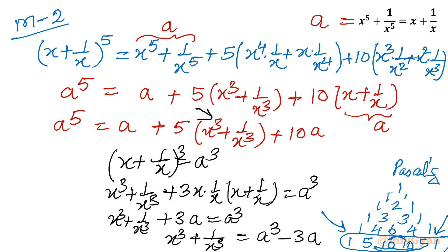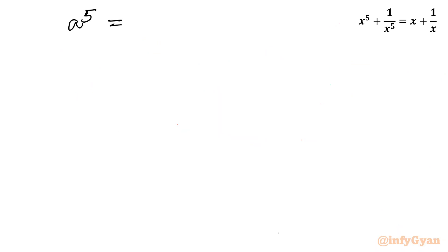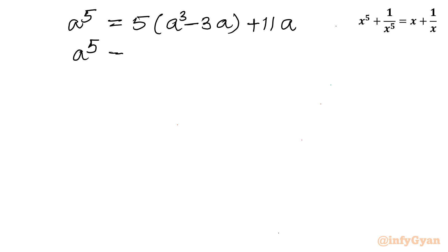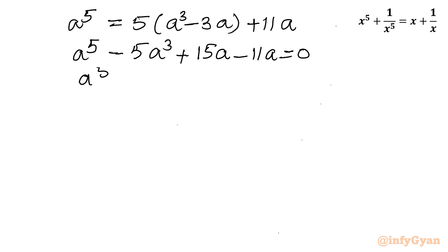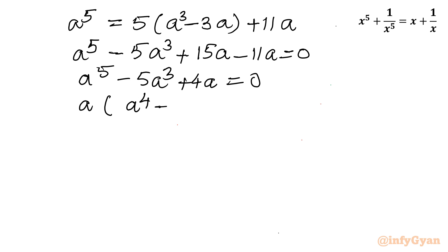So x cube plus 1 over x cube equals a cube minus 3a, which I substitute back. The equation becomes a power 5 equals 11a plus 5 times (a cube minus 3a), which simplifies to a power 5 equals 5a cube minus 15a plus 11a, i.e. a power 5 minus 5a cube plus 4a equal to 0. Taking out common factor a: a times (a power 4 minus 5a square plus 4) equal to 0.